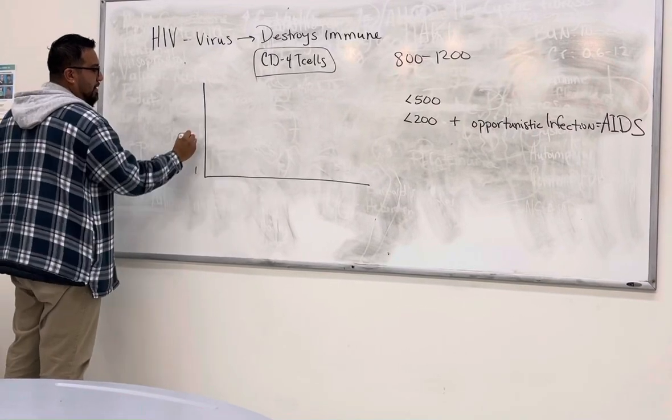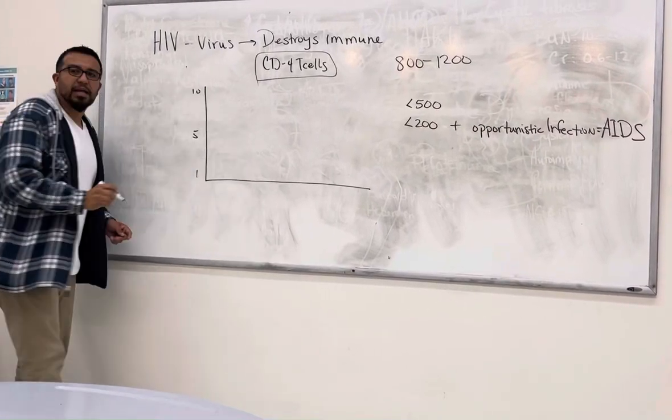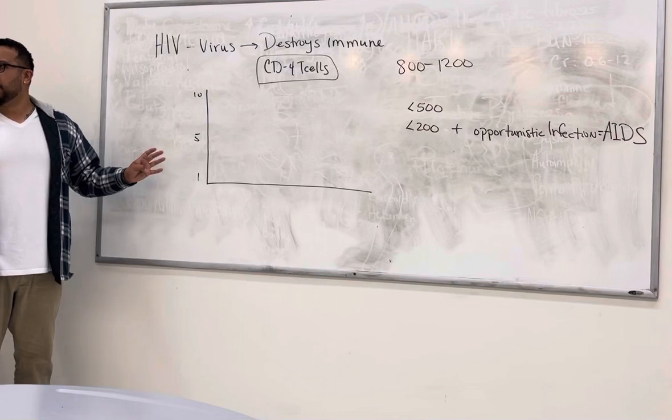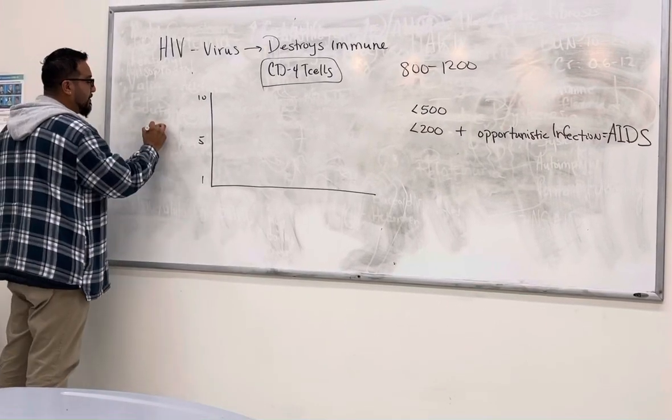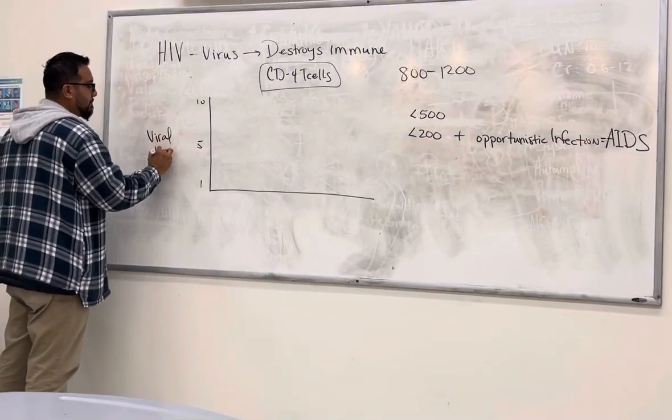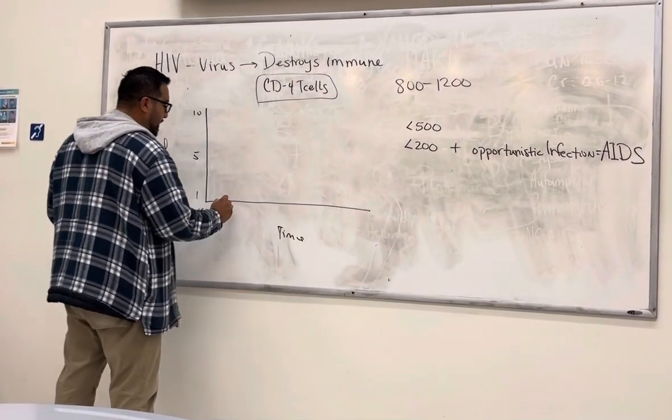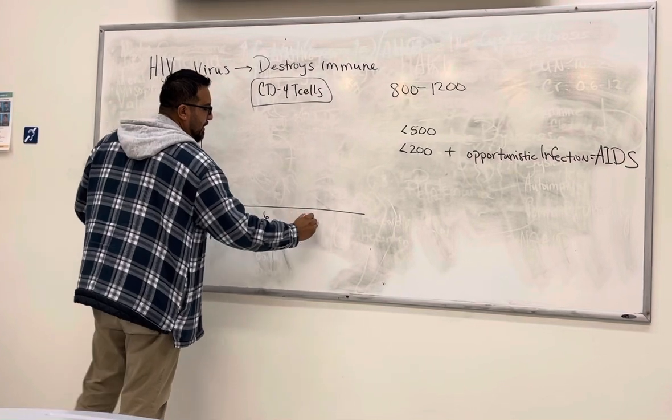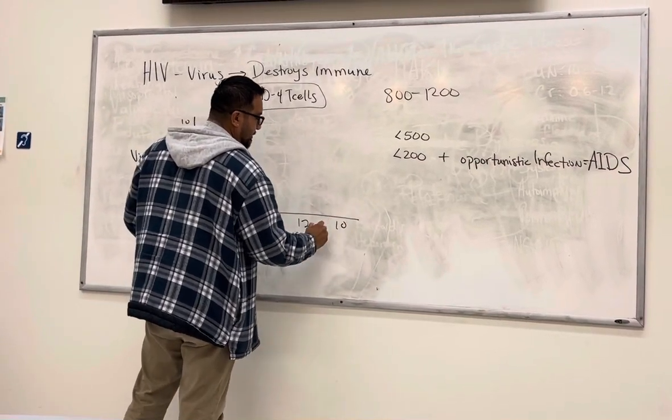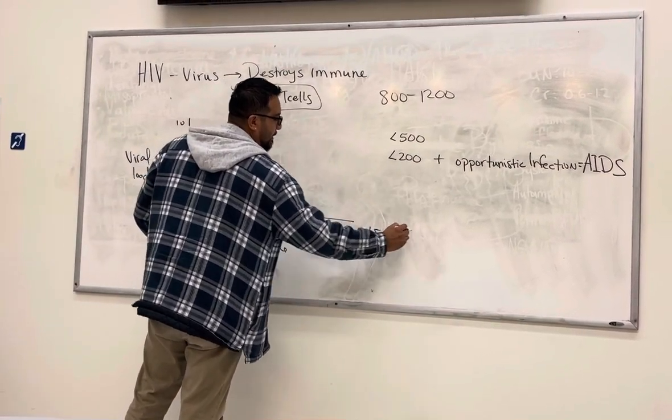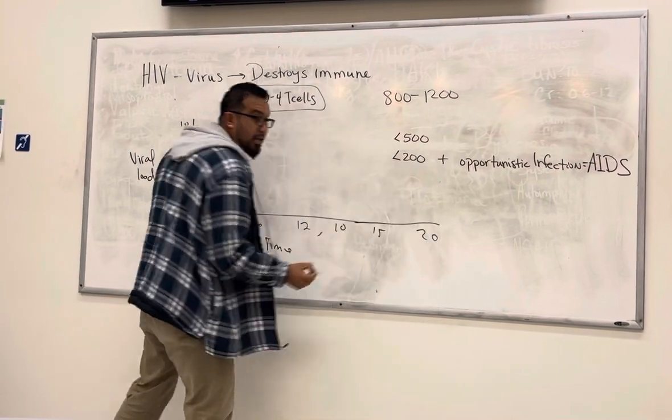So this right here, one, five, and ten, it's used to describe right now the viral load. How much of the virus do you have in your bloodstream? And this right here is just time. Let's say three months, six months, a year, 10 years, 15, 20. You guys get the gist, right?